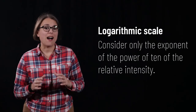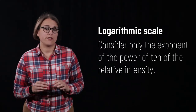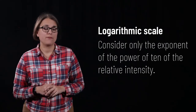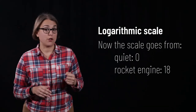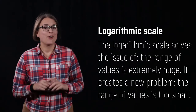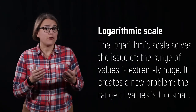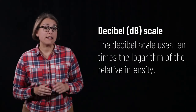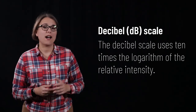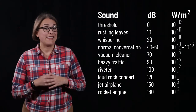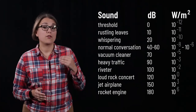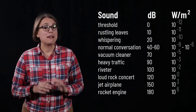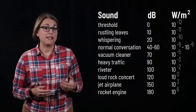To solve this issue, we use a logarithmic scale to discuss intensity. The logarithm just looks at the exponent of the power of 10 and ignores the base. Our scale of values now goes from 1 — the threshold of human hearing — to 18 for the rocket engine. The decibel scale solves the remaining problem: after taking the logarithm of each relative intensity, we multiply by 10. The decibel value is the logarithm of the relative intensity of a sound compared to the threshold of human hearing, multiplied by 10. Many common sounds can be represented with a decibel value indicating this physical quantity.